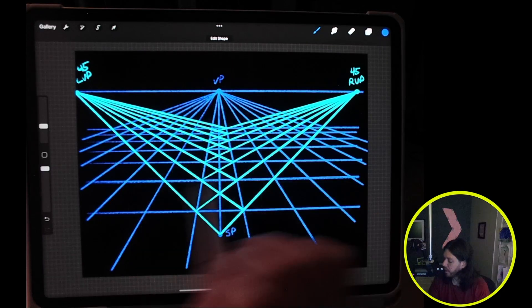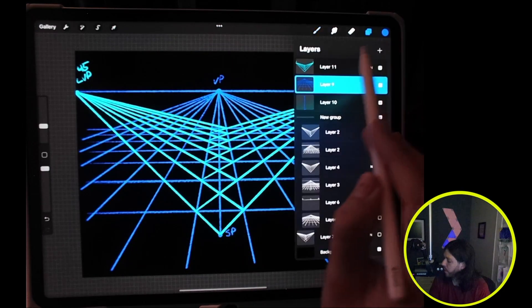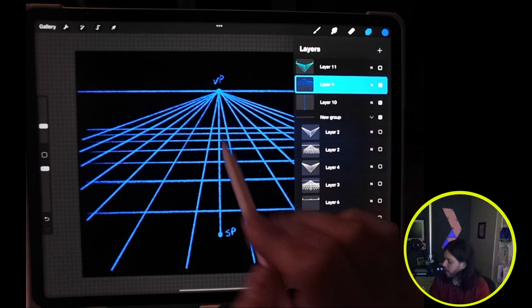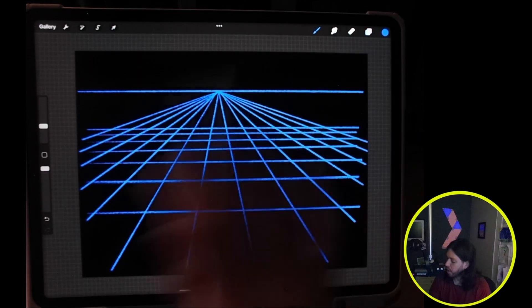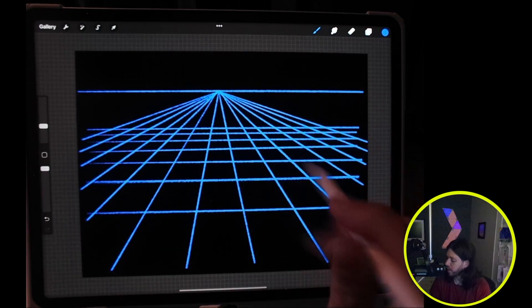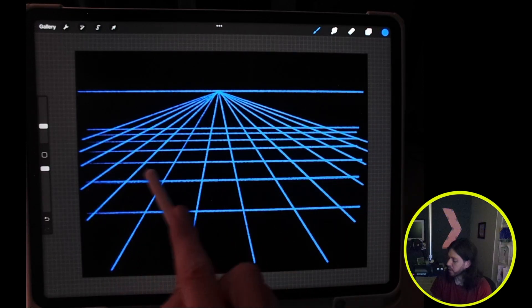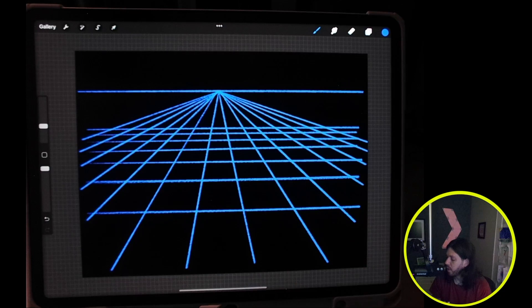All right, now that we have all of our vanishing points done, I will go ahead and hide our angle and hide our station point, and we have our perfect square grid. So each one of these squares are going to be the same in size, which is really useful when we go to scale objects in perspective.